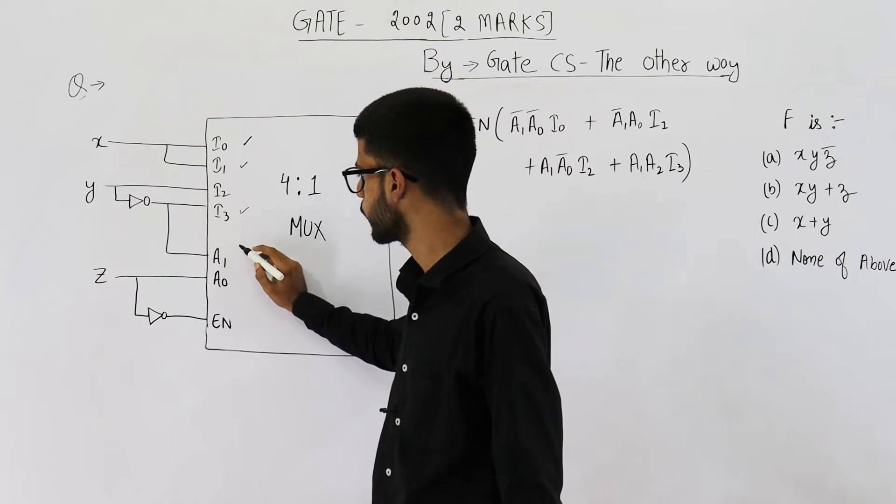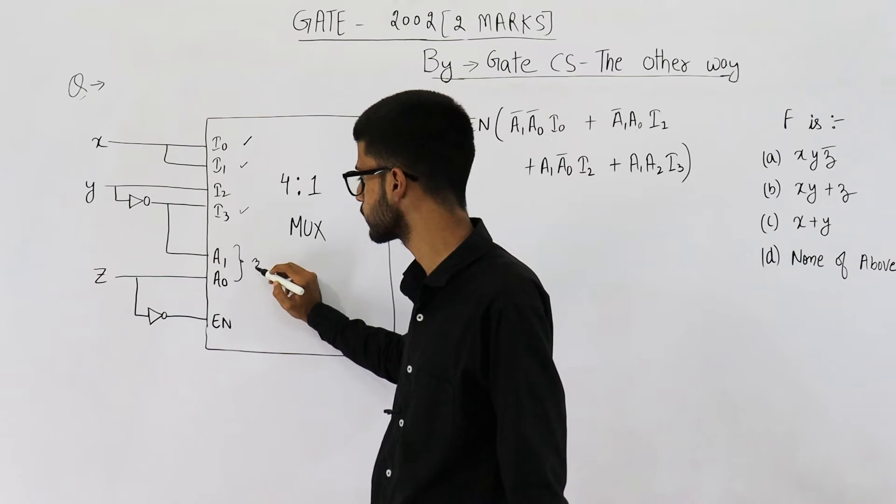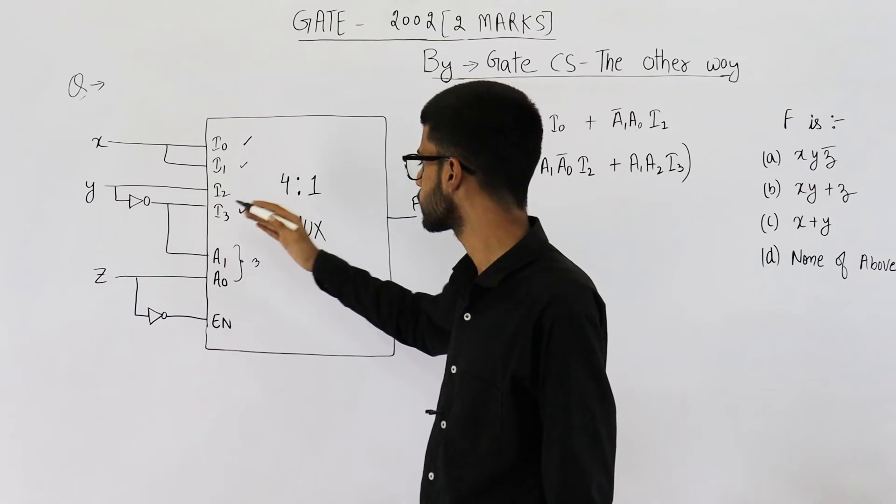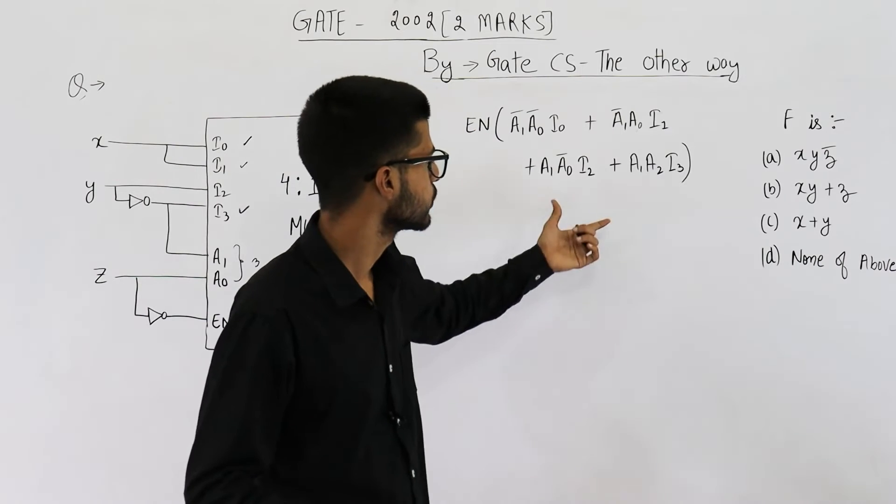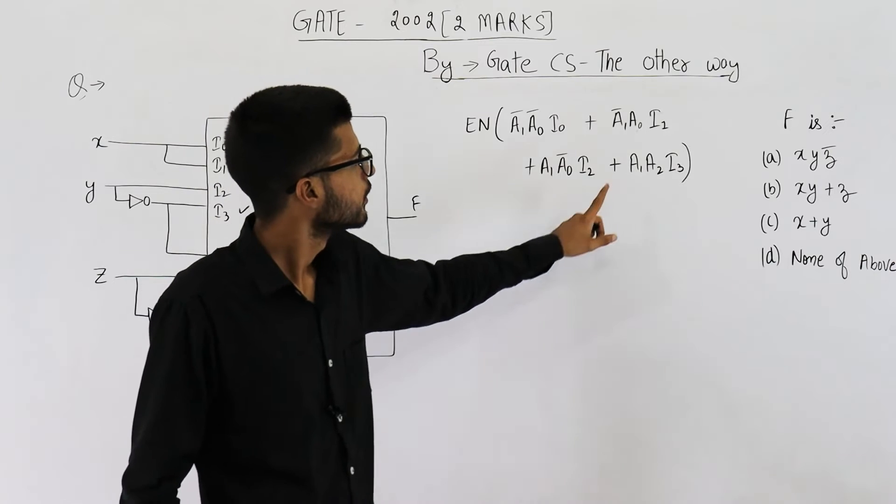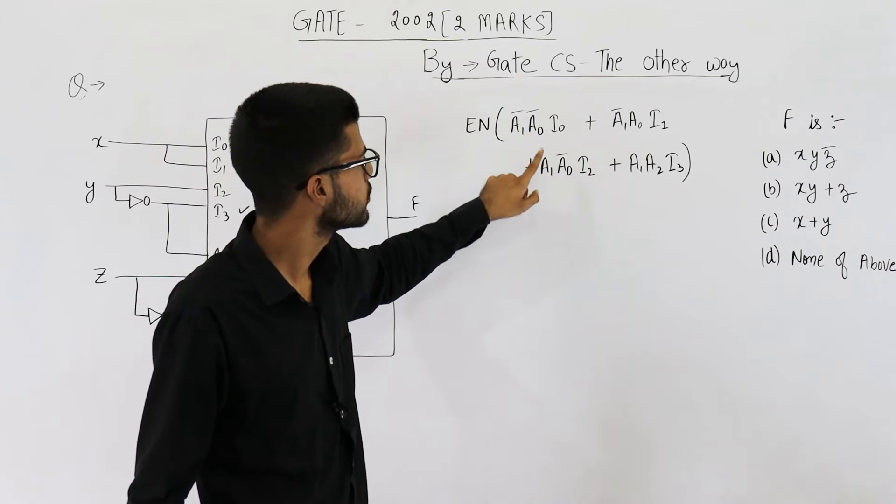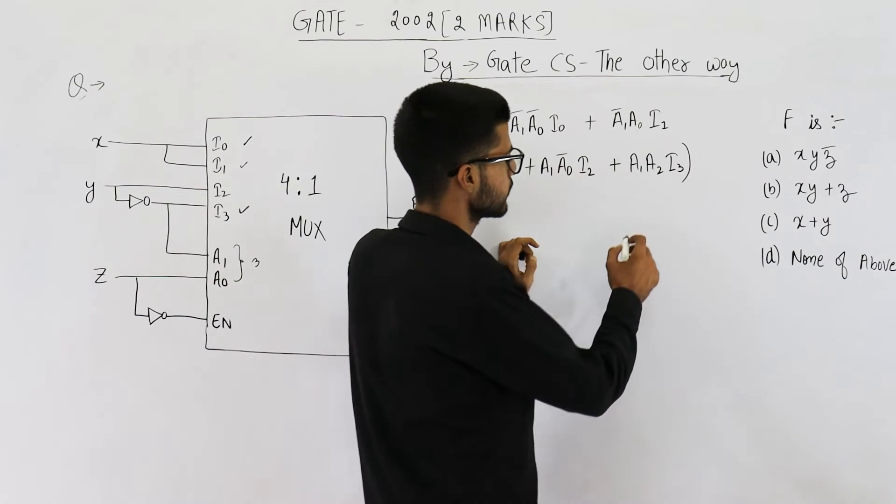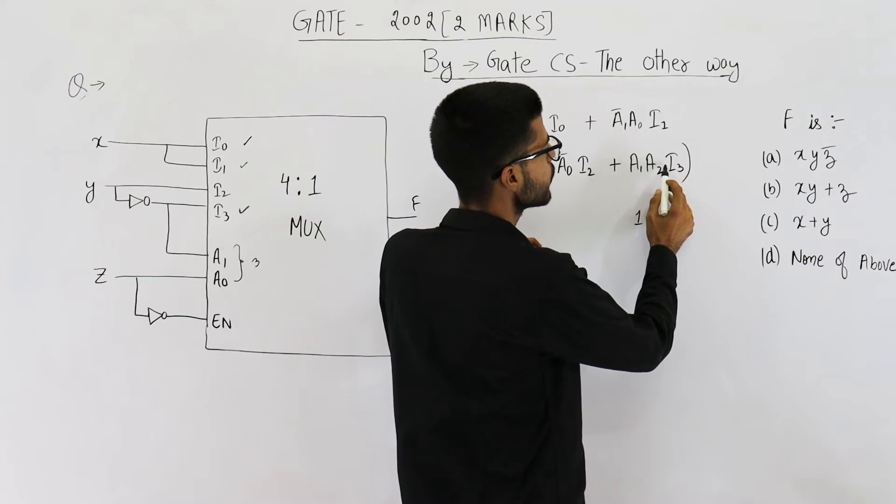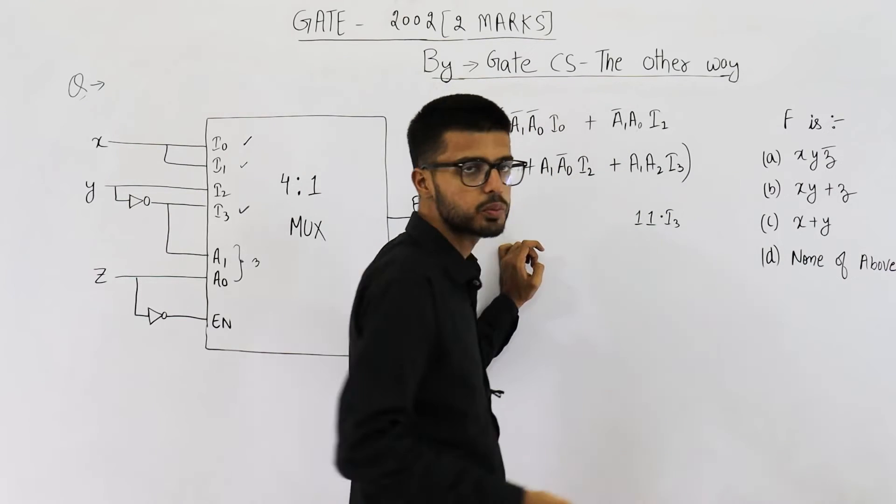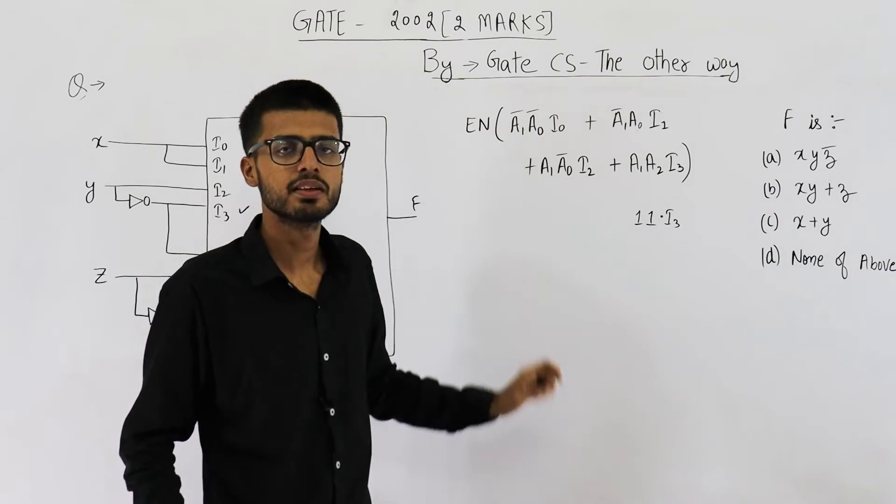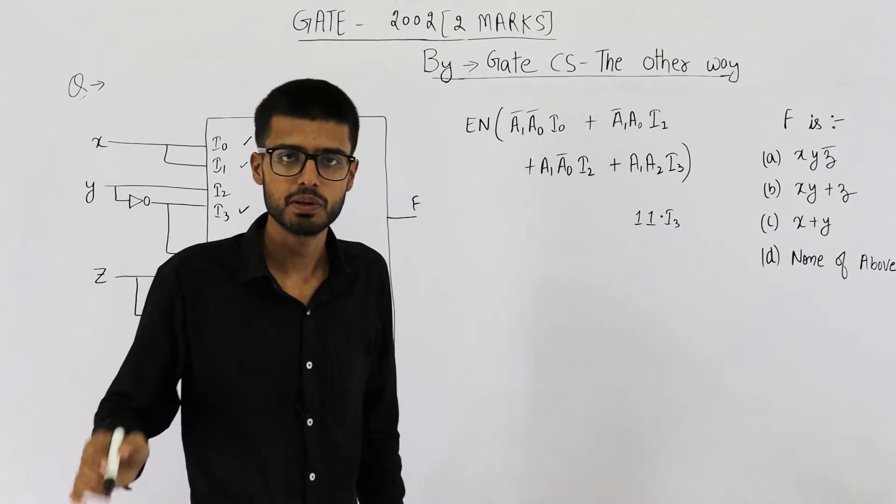See, according to this diagram, when the select lines say the input is 3, we want I3 to be the output. Multiplexer will just give I3 as output. Let us see if it's actually true according to this equation. You substitute the values 1, 1. This one will become 0. This one will also become 0. 1, 1 means only this term will give you 1 and it is 1 dot 1 dot I3. So, the output is I3. That means according to diagram also it is I3 and according to this equation also it is I3. That means this equation is perfect.